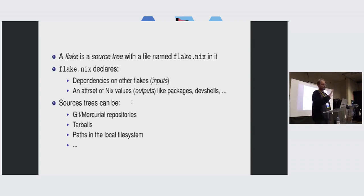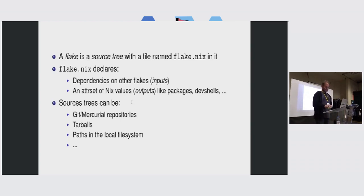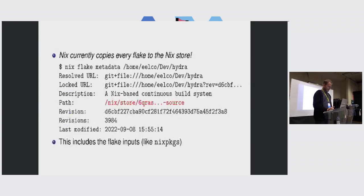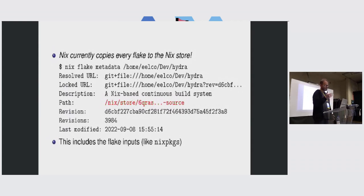This talk is actually not really about flakes — it's about fetch tree, which is sort of the operation that underlies flakes. Fetch tree fetches a so-called input, which could be a git repository or a path. The problem is large source trees, because Nix currently copies every flake or every tree to the Nix store.